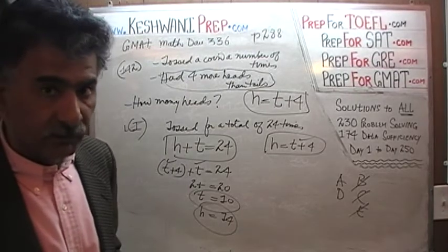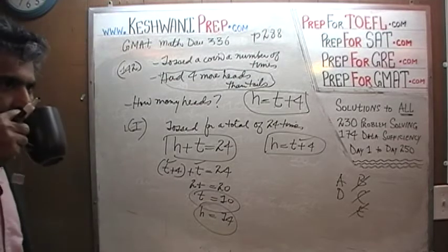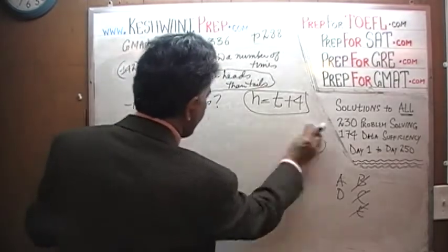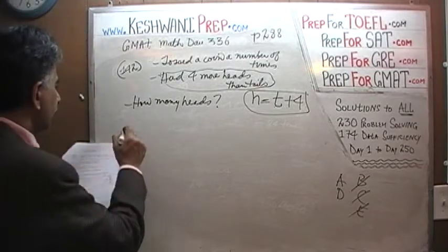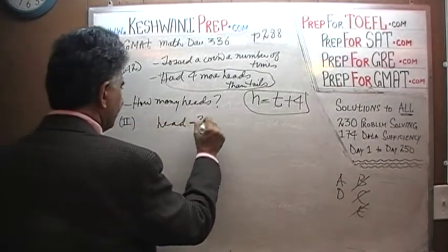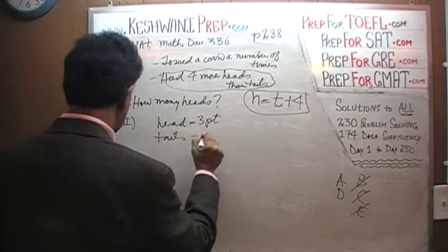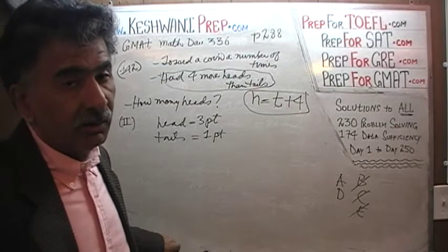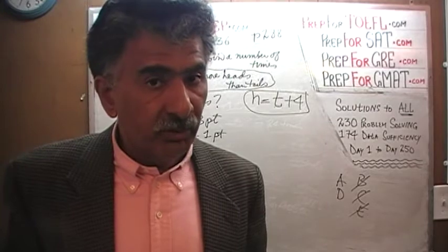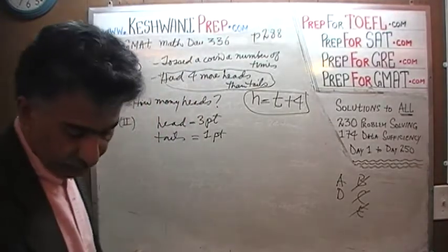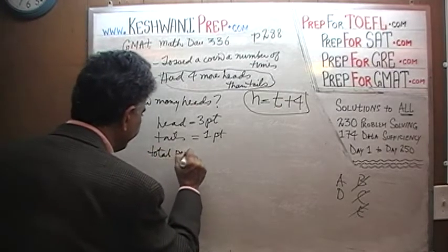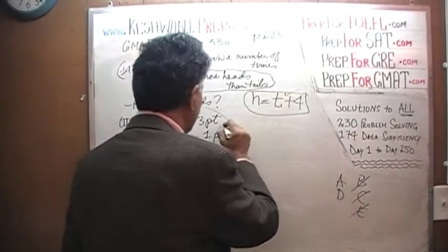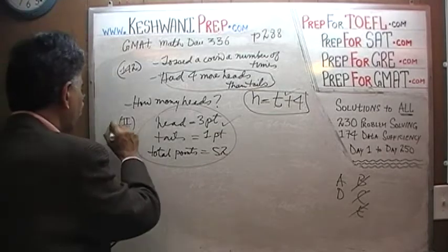Let's look at the second statement. They tell us that heads are worth three points and tails are worth one point. Simply knowing the point values is not enough unless they give us the total number of points generated. And they do — they tell us the total number of points equals 52. That's our other equation. Two independent equations, two unknowns — the second statement by itself also does the job.